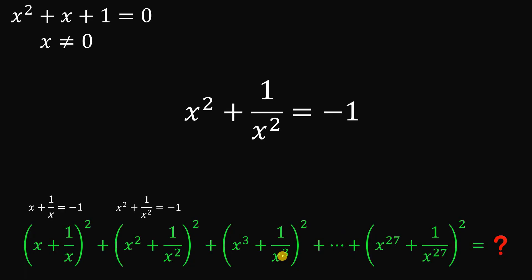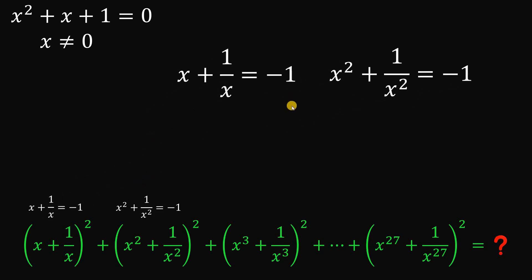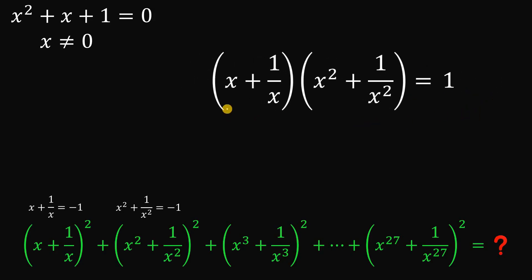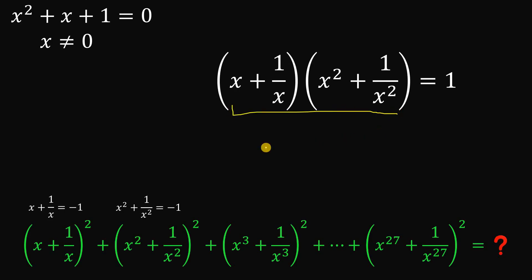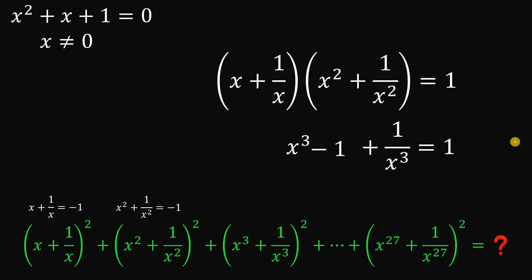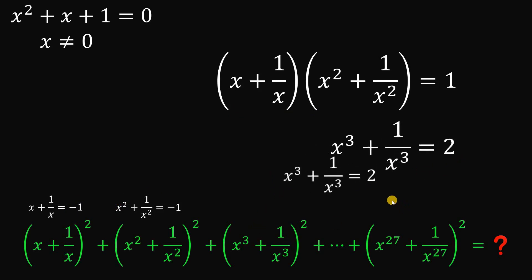Now for x³ + 1/x³, we multiply (x² + 1/x²) by (x + 1/x). That gives (−1)(−1) = 1, and expanding the left side yields x³ + x + 1/x + 1/x³. We already know x + 1/x = −1, so substituting and adding 1 to both sides gives us x³ + 1/x³ = 2.